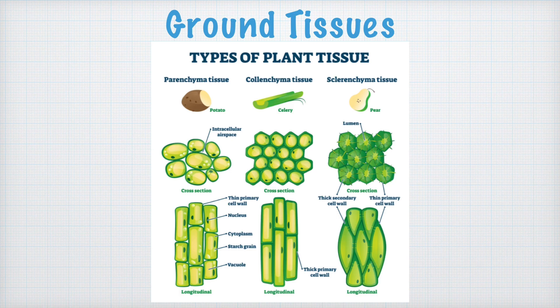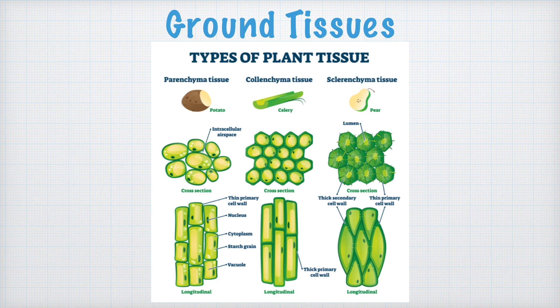Let us look at the ground tissues overview. The first one is parenchyma tissue, which we can find in potato. As you can see, there are spaces between the cells and the cell wall is quite thin. Then we have colenchyma tissue — the cell wall is thicker but uneven, and the example given is celery. The last one is sclerenchyma tissue, found in pear, and its cell wall is the thickest among the three types of ground tissue.